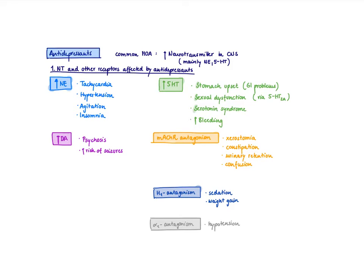How do they do that? They all kind of block either reuptake transporters or block the degradation of neurotransmitters, so that more neurotransmitters are available in the synaptic cleft. Another important point is that all antidepressants are quite equally effective. So in order to recommend one specific antidepressant to your patient, you really have to consider the adverse effects, because these are the ones that distinguish the different classes of antidepressants.